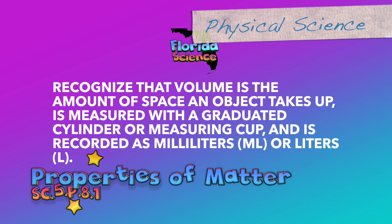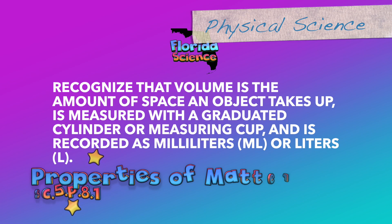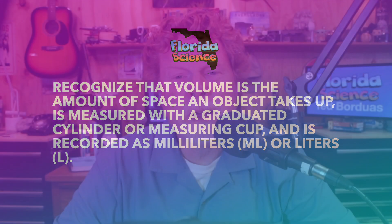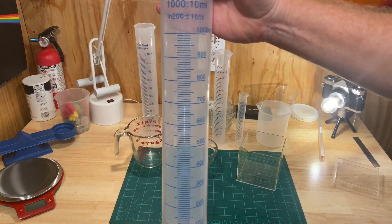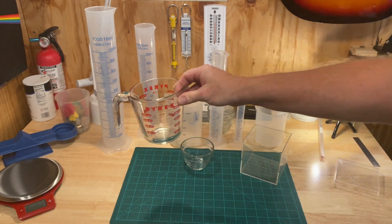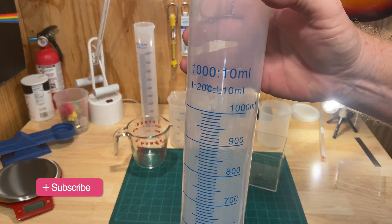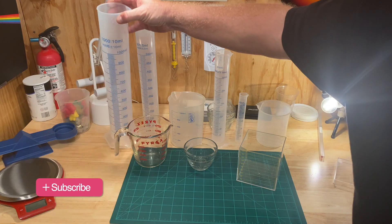Recognize that volume is the amount of space an object takes up, is measured with a graduated cylinder or measuring cup, and is recorded as milliliters (ml) or liters (L). Volume is the amount of space that an object or material takes up. In science, volume is measured in milliliters. One thousand milliliters are equal to one liter. This soda bottle contains two liters of soda, just to give you a familiar example.